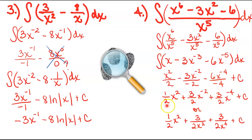You could write it with negative exponents, or if you wanted, you could move those variables back down to the denominator to get rid of the negative exponents. Either one is exactly the same thing, so it doesn't matter which way you write it. If the problem said to give answers without negative exponents, then write it that way. And of course, don't forget your arbitrary constant — the plus c — at the end.